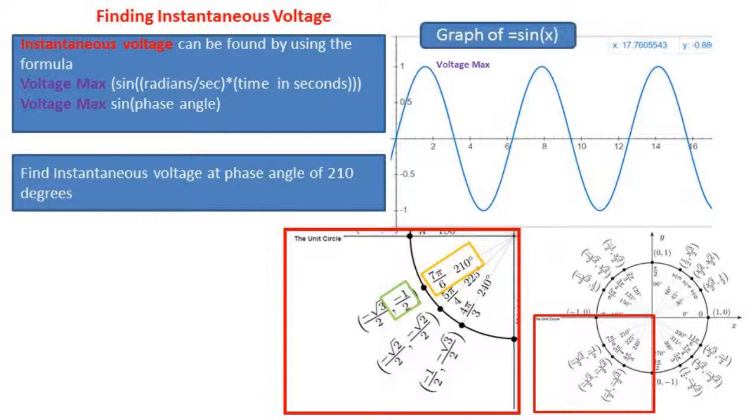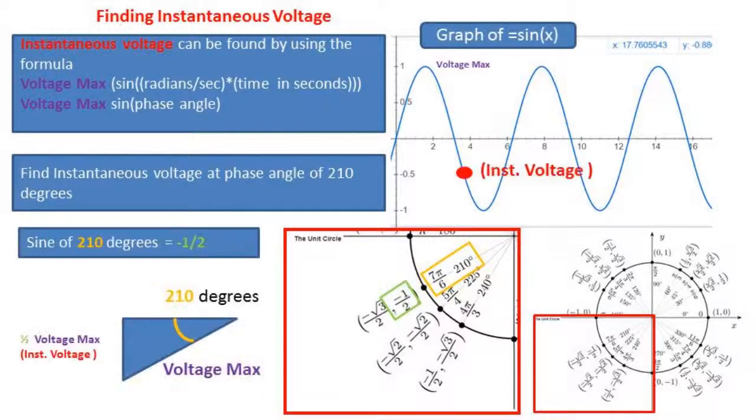You could use a calculator as well, but I like to use the unit circle whenever possible. To help explain this, I put a triangle in the lower left-hand corner. We're really just doing some SOHCAHTOA here. So we're taking the sine of 210 degrees and multiplying that by the voltage max. So it ends up being negative one-half times the voltage max equals the instantaneous voltage.